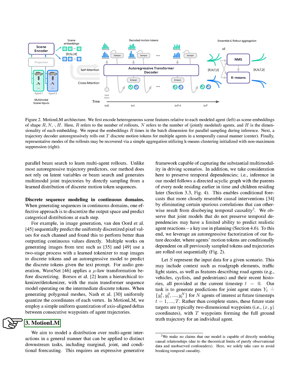These tasks include marginal, joint, and conditional forecasting. To do this, we need a generative framework that can capture the substantial variability in driving scenarios. We also want to preserve temporal dependencies in our model. This means that the inference in our model follows a directed acyclic graph where the parents of every node are earlier in time and children are later. This allows us to make conditional forecasts that more closely resemble causal interventions.